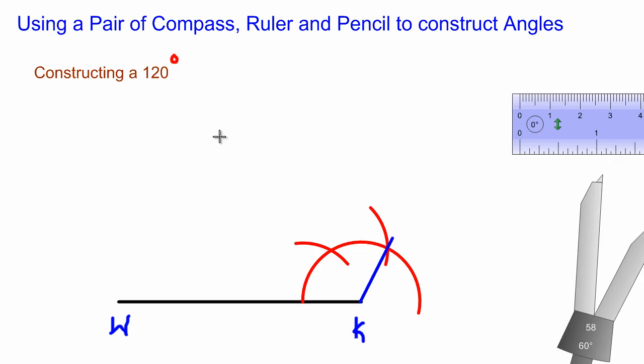I'm going to draw a line going through that point of intersection with my ruler, straight up. It doesn't matter where you stop out here, and that is a 120-degree angle. Good, bye-bye.